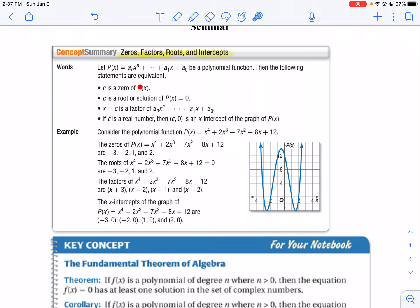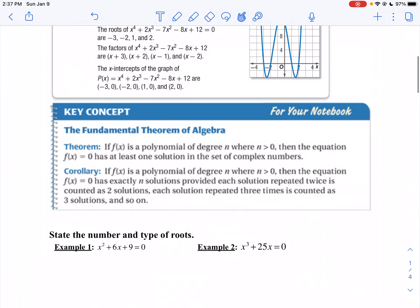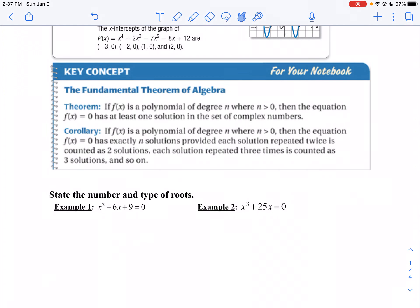Now, if we take a look at this, the fundamental theorem of algebra says this. If I look at the exponent, it tells me how many roots or zeros I'll have. It doesn't tell me the kind, but it tells me how many we're going to have total.